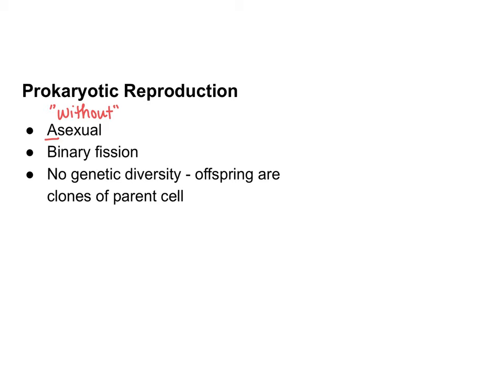They primarily reproduce using a process known as binary fission. Binary fission is similar to mitosis in eukaryotes, but remember that eukaryotes have a nuclear membrane and prokaryotes don't.